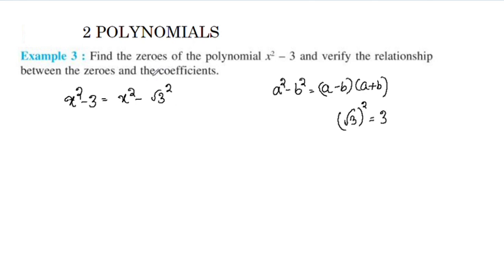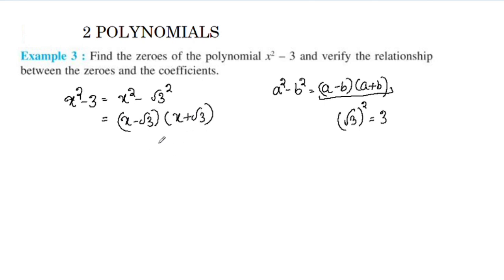We can solve this problem by factoring. Here a is x and b is root 3. We take 2 factors: x minus root 3, and x plus root 3. Setting each factor equal to 0: x minus root 3 equals 0, so x equals root 3. And x plus root 3 equals 0, so x equals negative root 3.